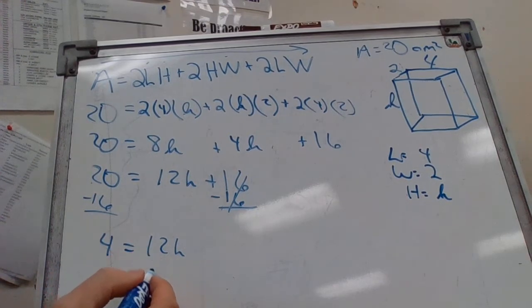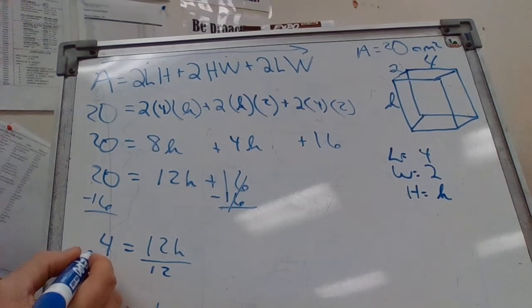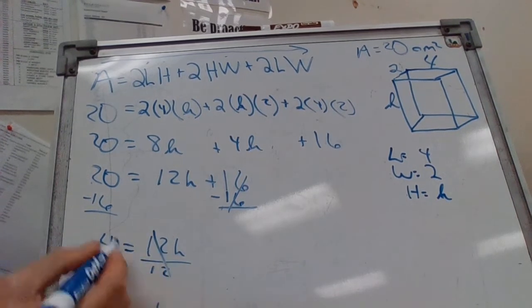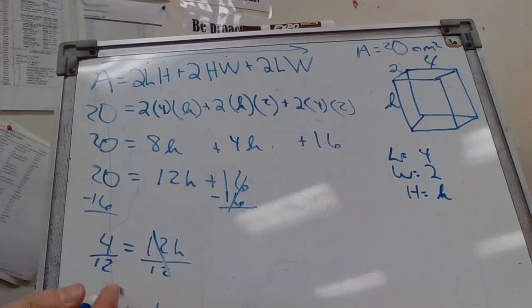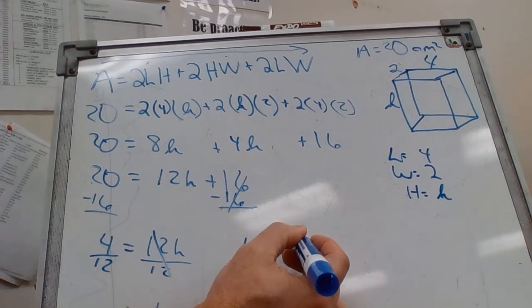To get H by itself we've got to get rid of the 12 on each side, we divide each side by 12. So 4 divided by 12, it's going to be a decimal but it's a positive.